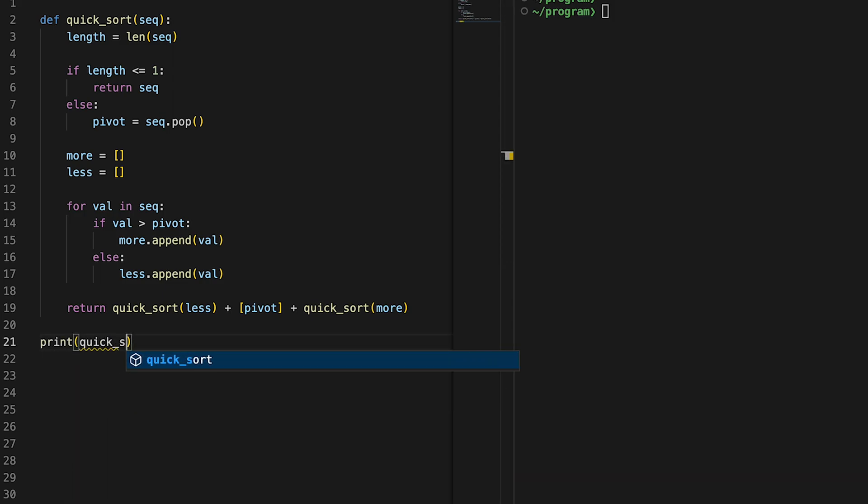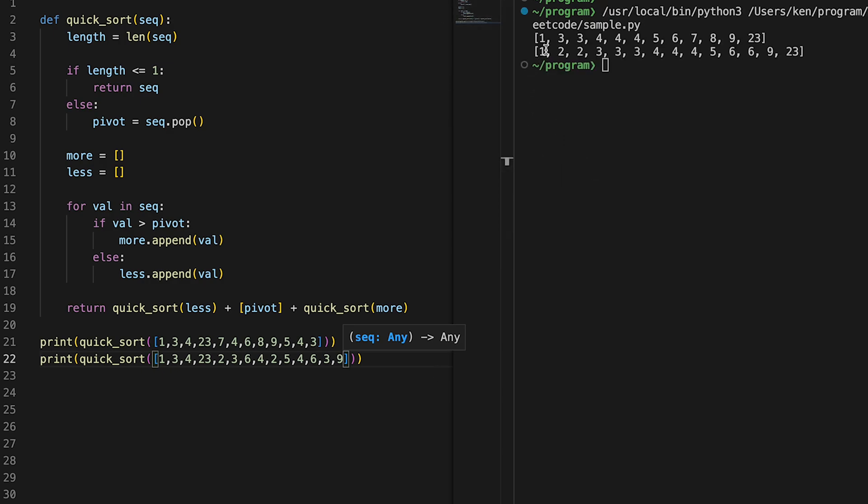Let's check. Print quicksort and give it random input. The first list outputs 1, 3, 3, 4, 4, 4, 5, 6, 7, 8, 9, 23. The second list outputs 1, 2, 2, 3, 3, 3, 4, 4, 4, 4, 5, 6, 6, 9, 23. Both lists are successfully sorted. Looks good.